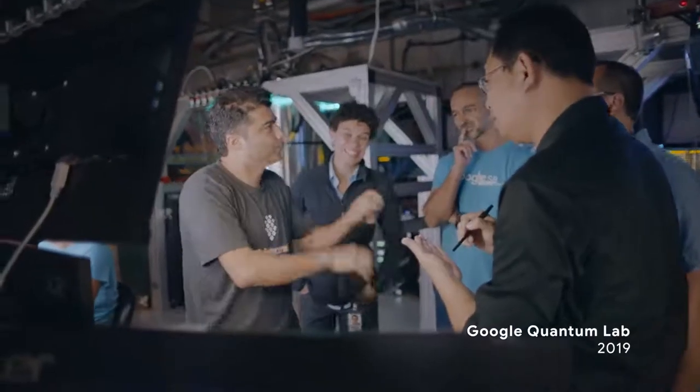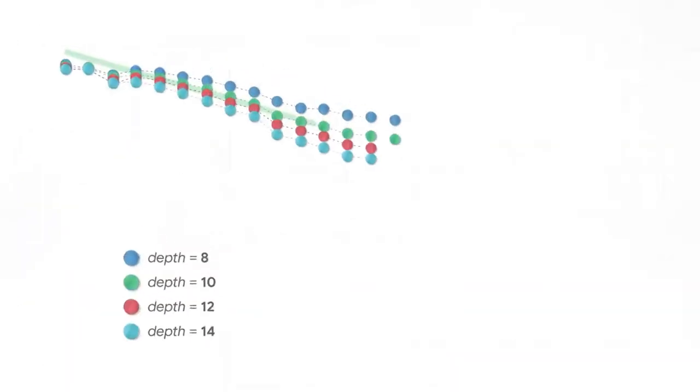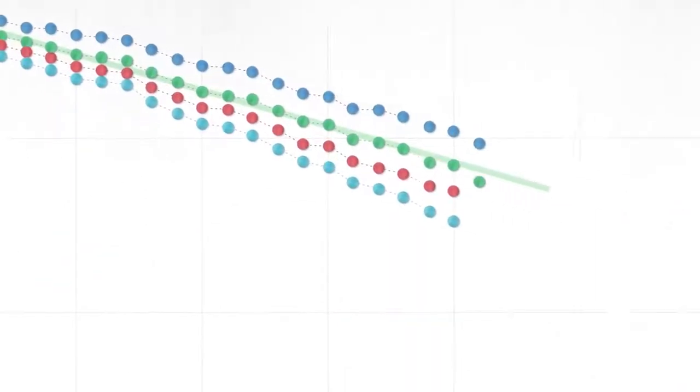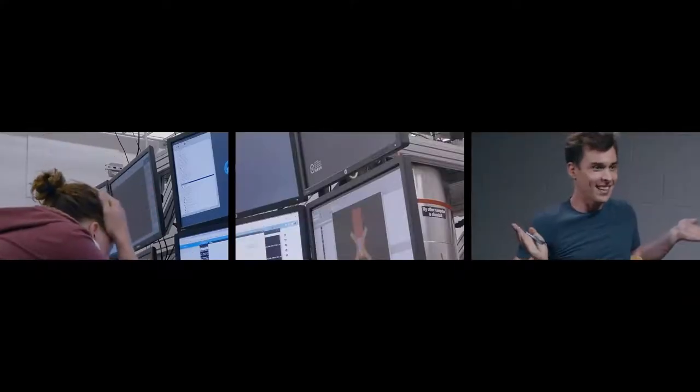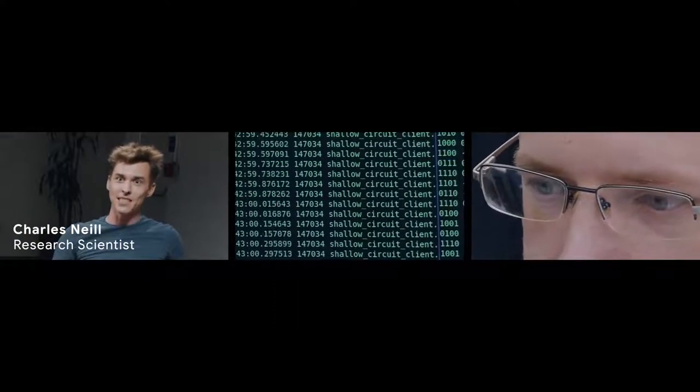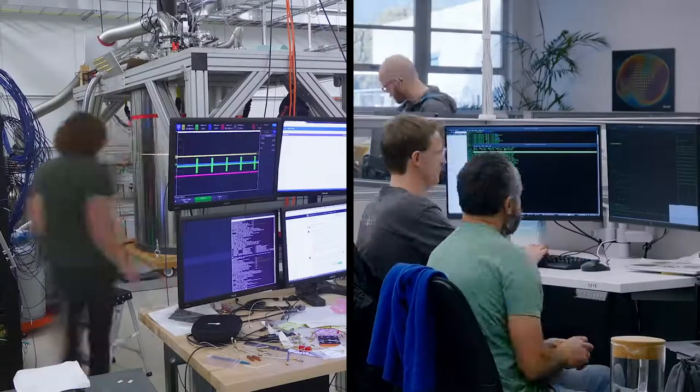When the experiment started, we were getting data from the experimentalists. We saw initially a beautiful straight line corresponding to our predictions. Then, right before we hit supremacy, the results dropped much faster and fell below the threshold where they needed to be. There was nothing we could do because we didn't know how to analyze past that point. Everyone thought we were in trouble at the large qubit count. It turned out the reason was rather benign — we calibrated a little bit better and then the problem disappeared.